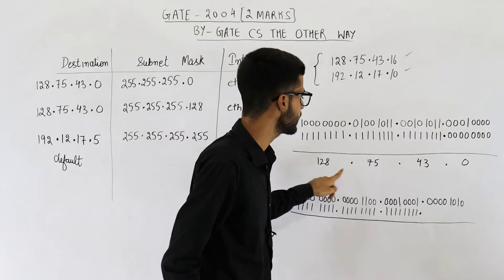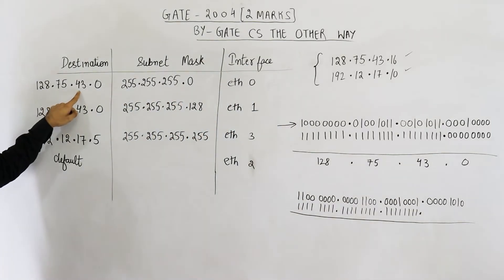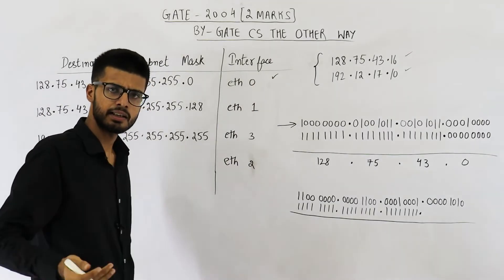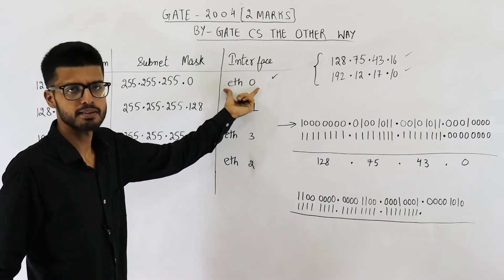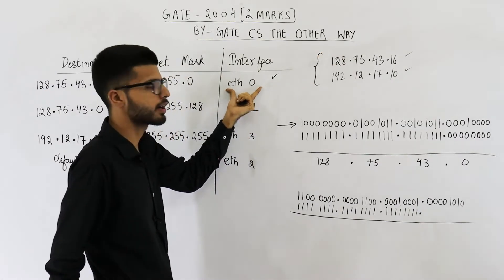So the result is 128.75.43.0. 128.75.43.0. So here we have a match. Can I declare that this one is the answer? That means can I say that this packet will be forwarded here?